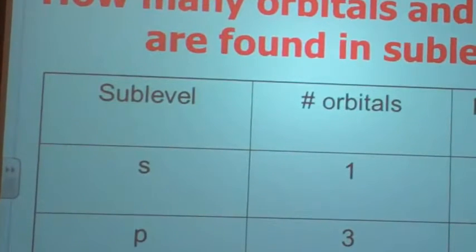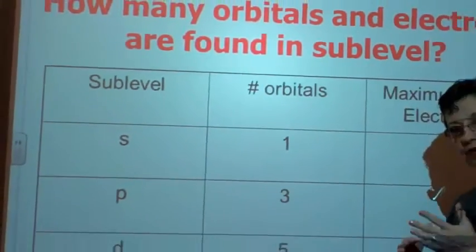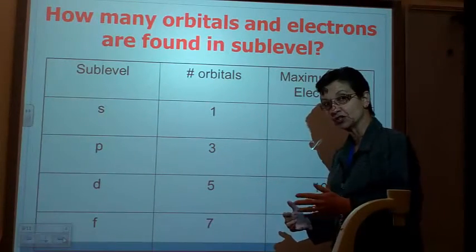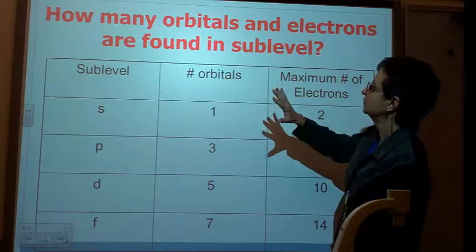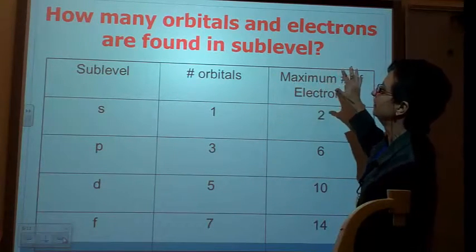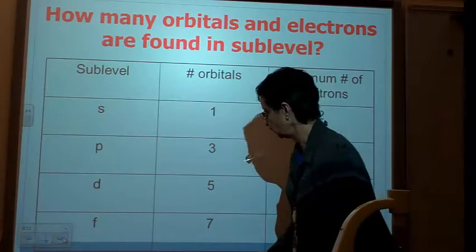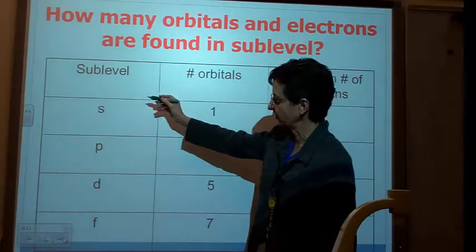All right. So, how many orbitals and electrons? So hold on to that analogy, because it's going to help you to develop the electron configuration in the classroom tomorrow. So, how many orbitals are in each one of these? So remember, the sublevels are S, P, D, F.